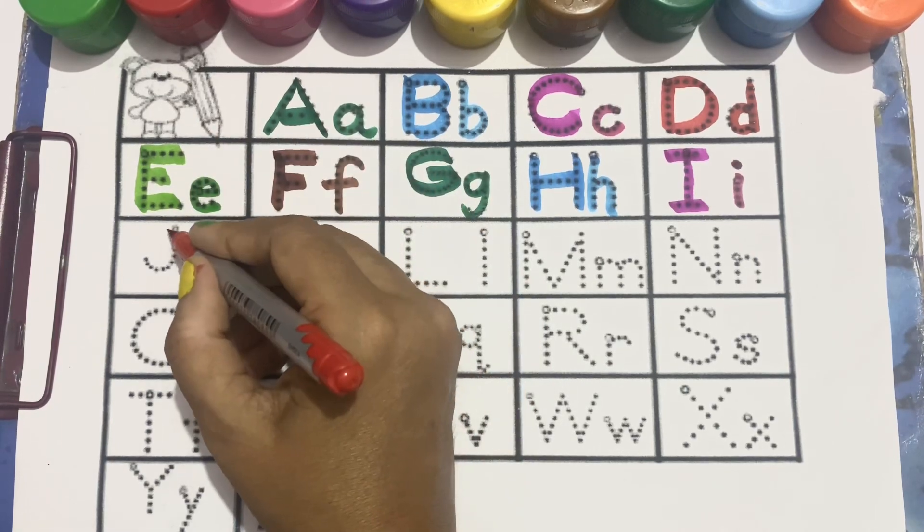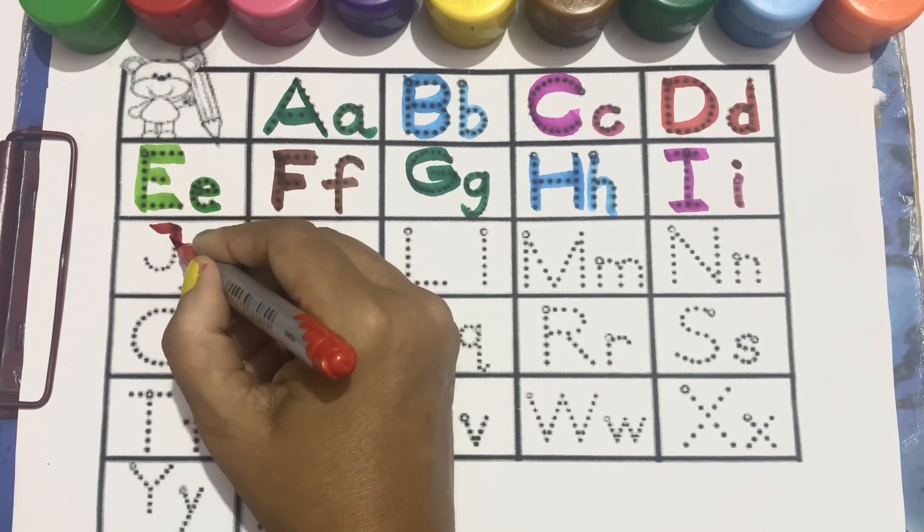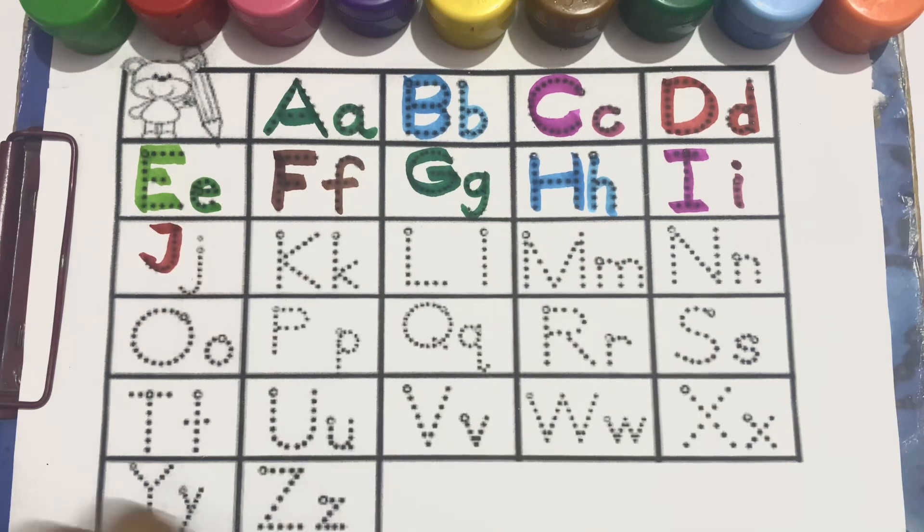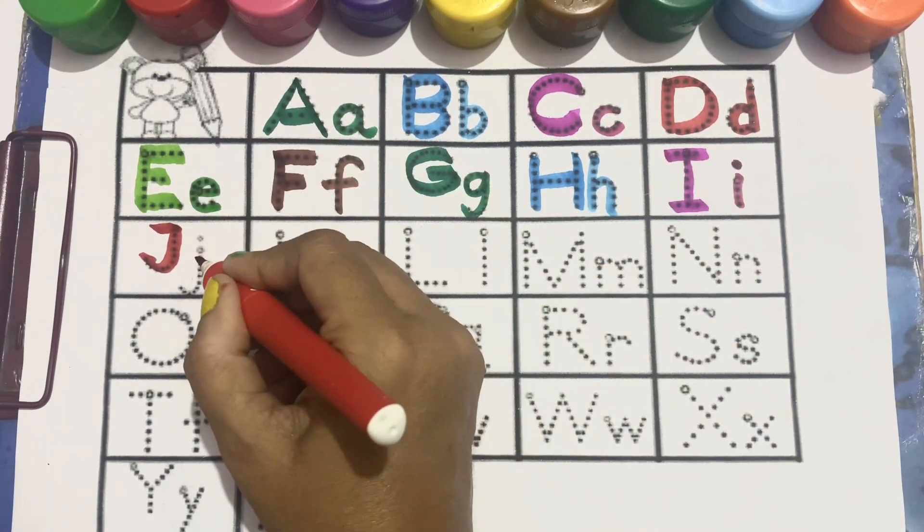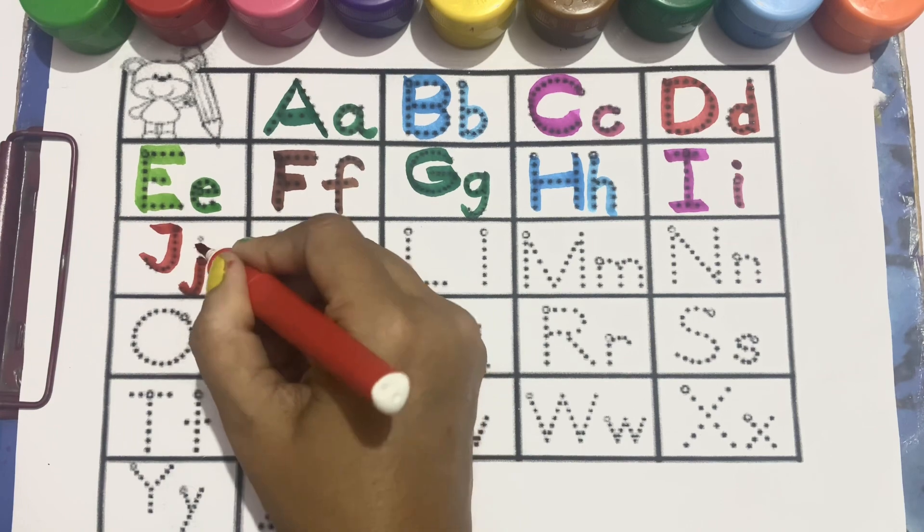J. Capital J. Now, small j, with red color.